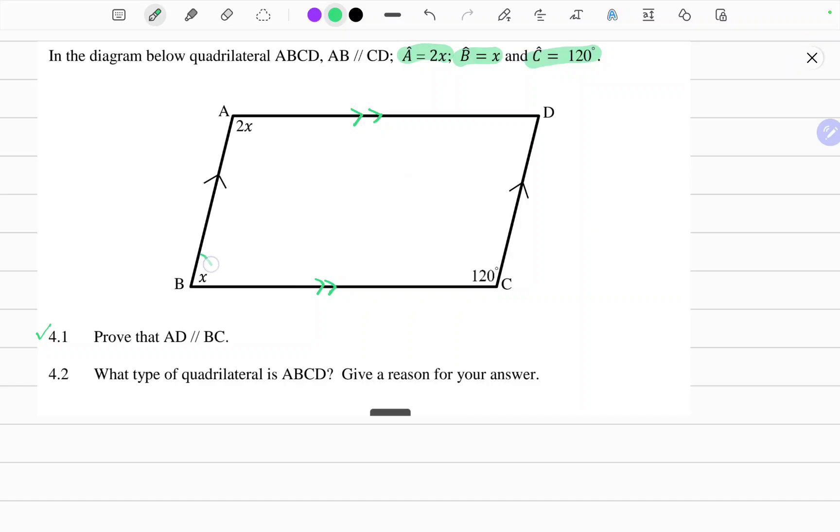So we can find angle x because we do notice that these two angles are co-interior because they lie in between parallel lines. You can see the U shape. Here's the U shape. And these are parallel.